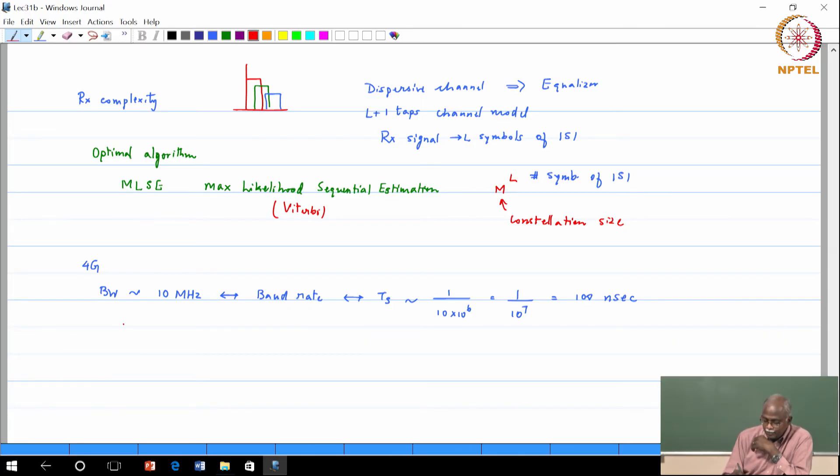Typical delay spread in a fading, in a multipath channel is 5 microseconds, 5 microseconds. So if I transmit a symbol now, it will come after 5 microseconds - a copy, latest copy will come after 5 microseconds, this will show up.